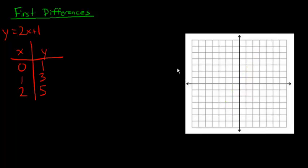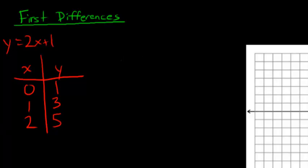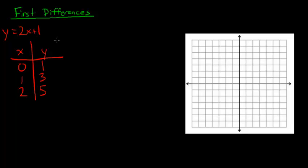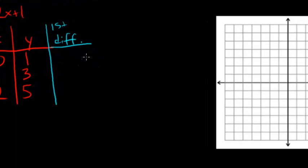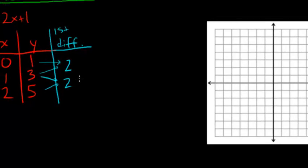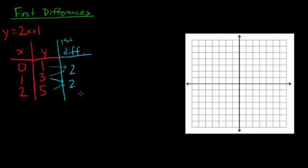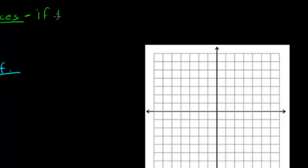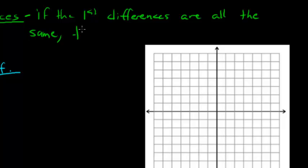What I'd like to show you today is how to do all of this without actually drawing the graph. We're going to keep our table of values because it's actually how we're going to solve this. But we're going to add another column called first differences — I'll shorten that to 'first diff.' All first differences tells me is what are the differences between y values. The difference between 1 and 3 is 2, and the difference between 3 and 5 is 2. Notice that in both cases the answer is 2. That tells you it is a linear relation — and here's the rule: if the first differences are all the same, the relation is linear.